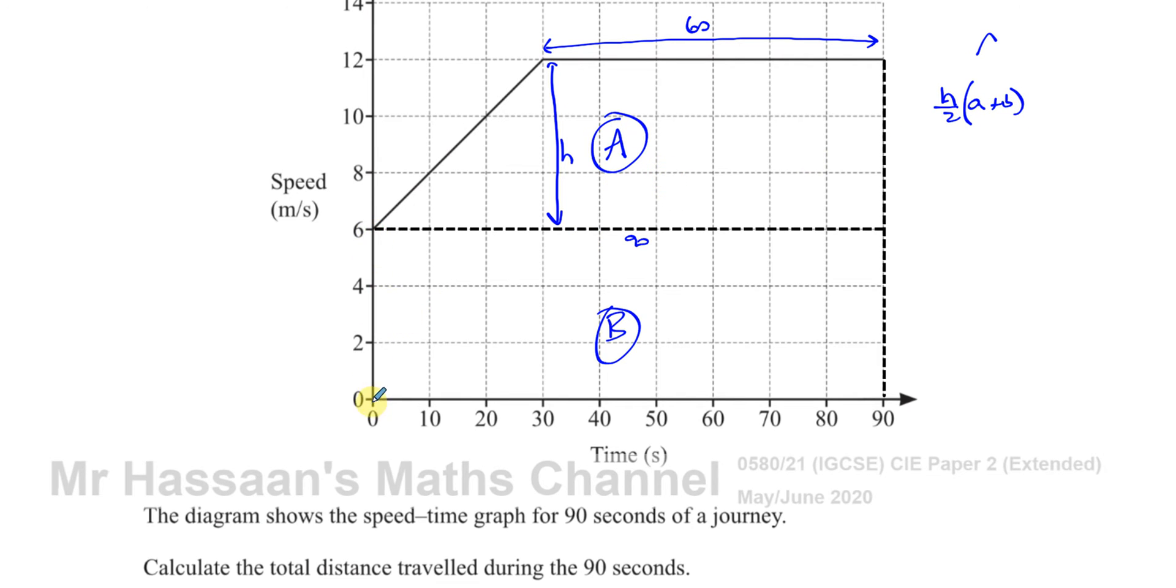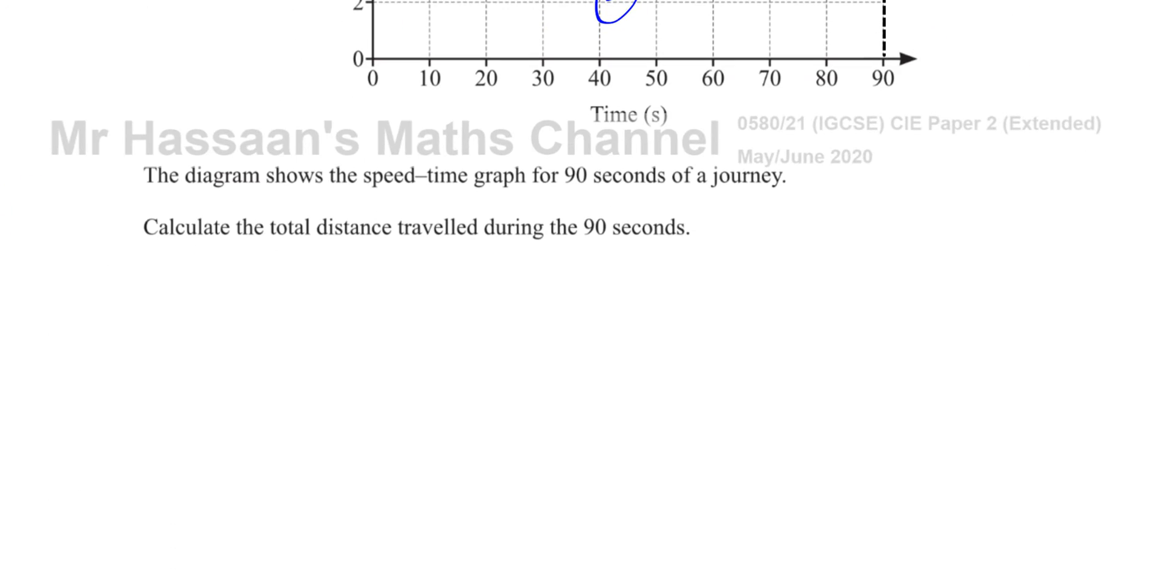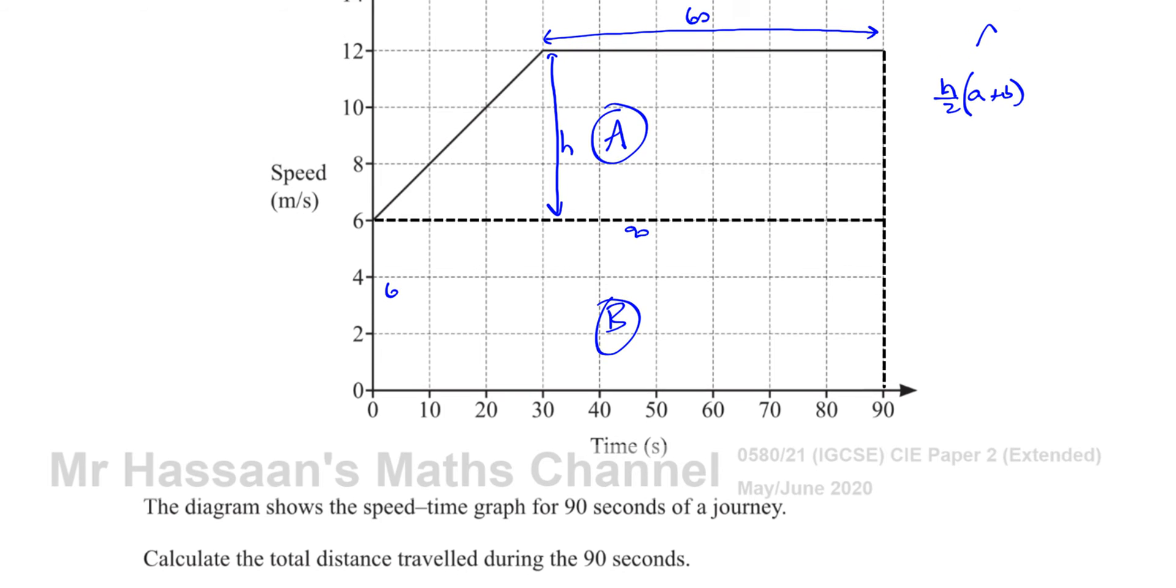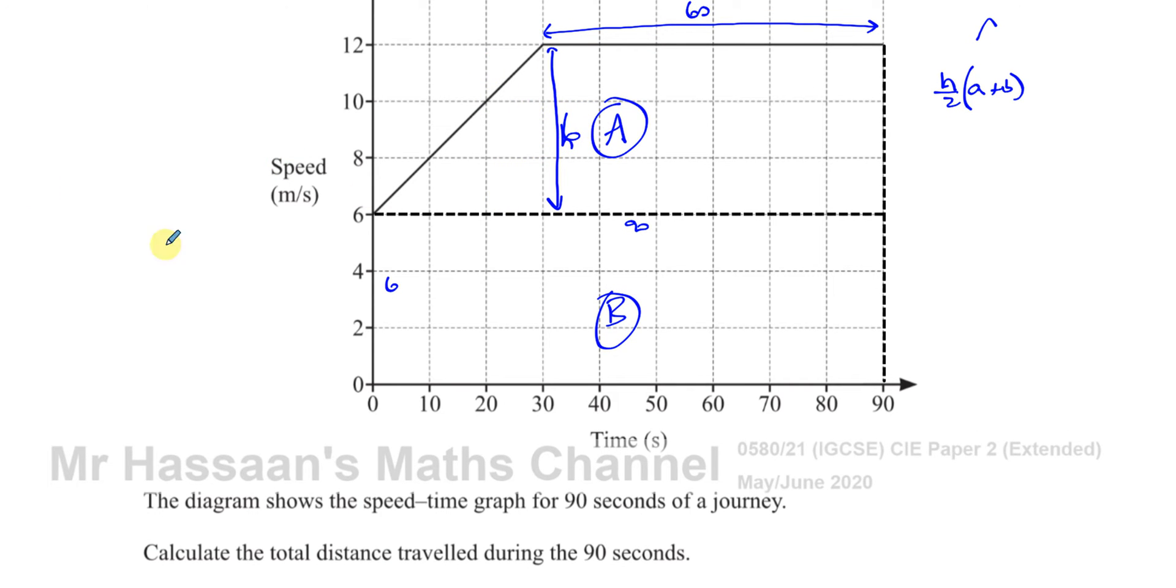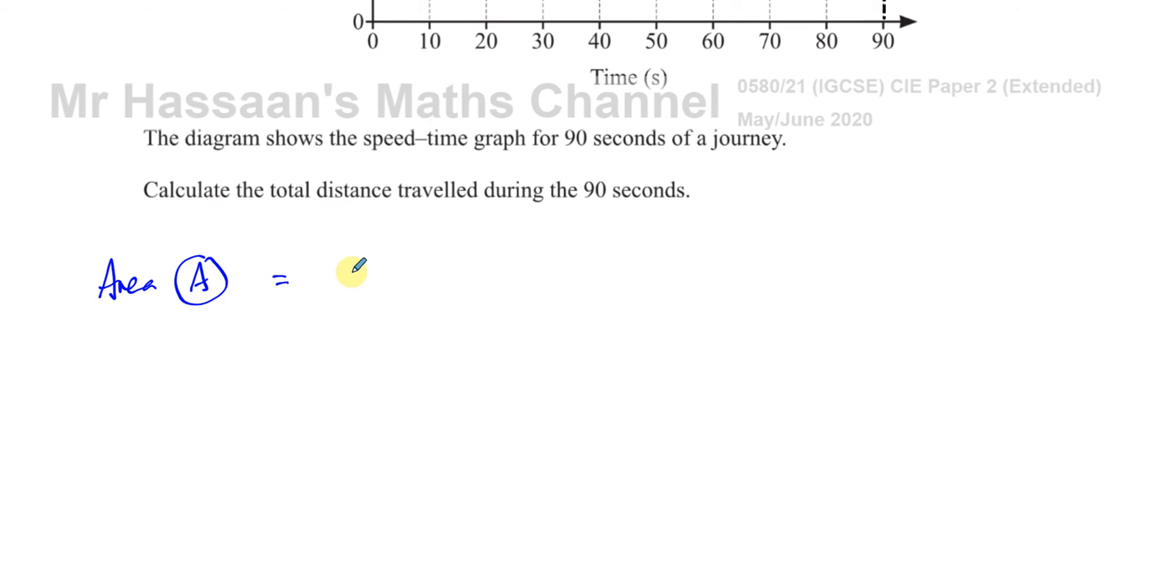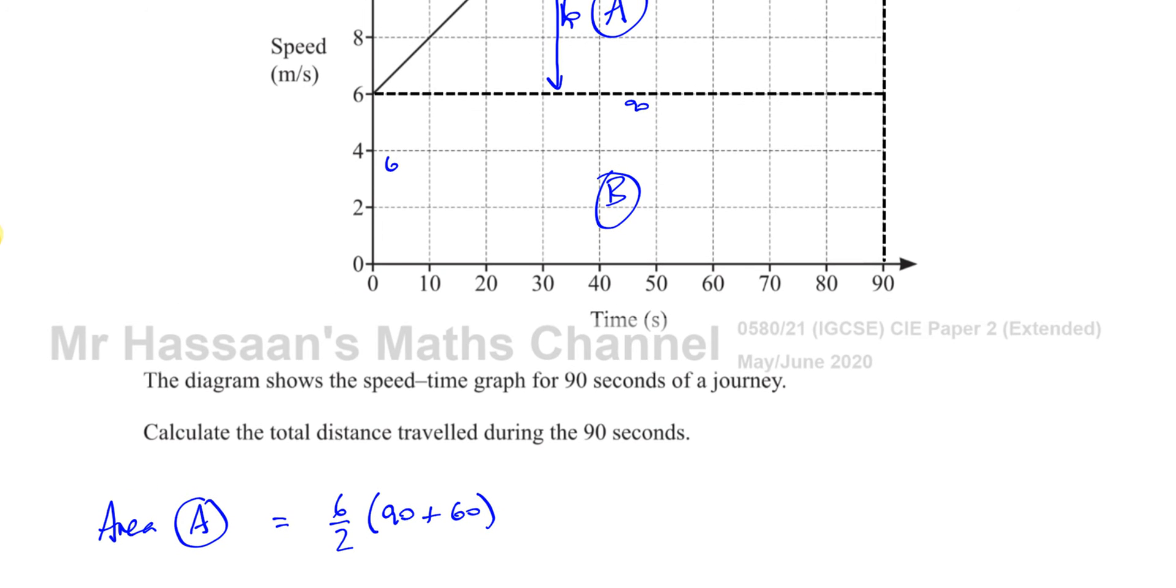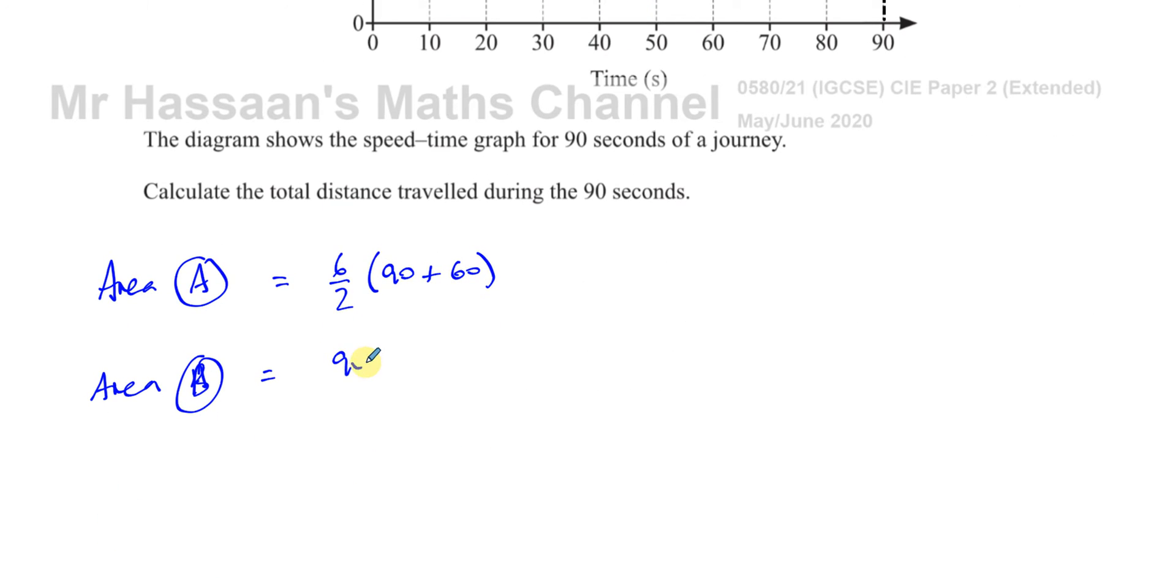The area of a rectangle is the length times the width. The length is 90, and the width here is 6. So the area of part A is equal to 6 over 2 times 90 plus 60. And the area of B, that rectangle underneath, is going to be 90 times 6.